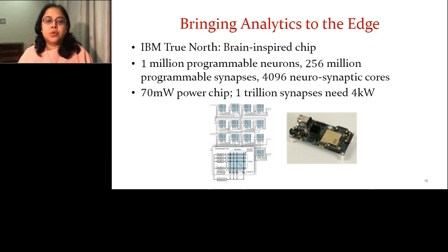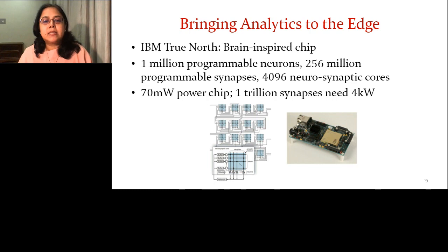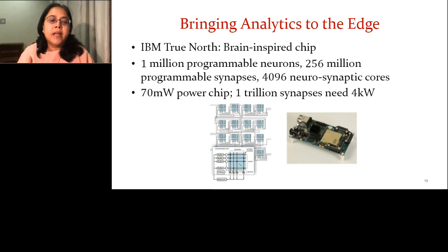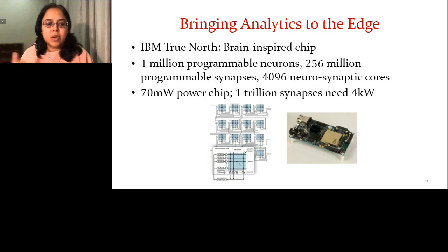The IBM TrueNorth chip tries to do edge computing inspired by the human brain. It has 1 million programmable neurons and 256 million programmable synapses. However, the human brain has 1 trillion synapses. This chip is 70 milliwatts in power, but if you scale to match the human brain you would end up with 4 kilowatts of power, versus the human brain's 20 watts. There is a huge gap.